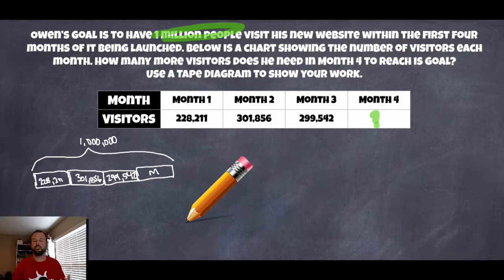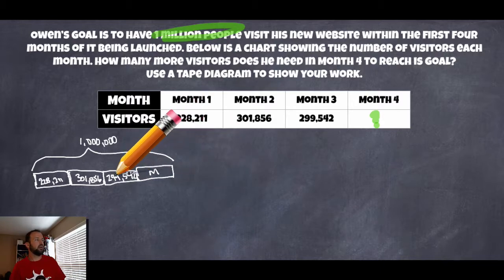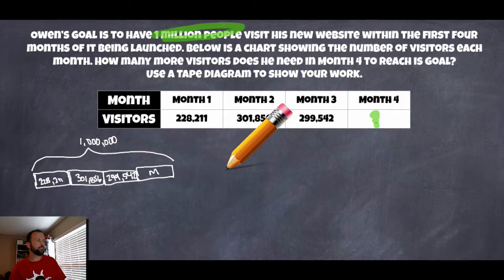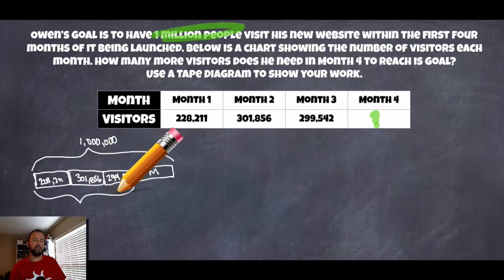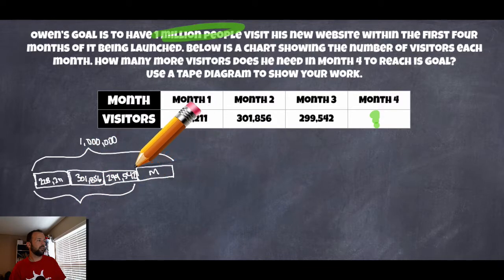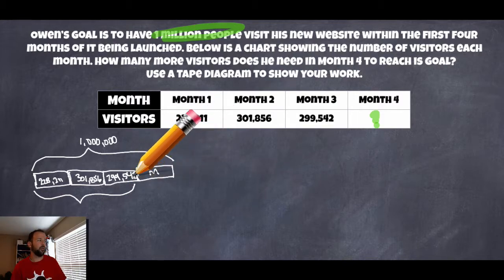You could call it V for visitors, or P for people, or W for website — whatever letter reminds you of what you're trying to find. So this sets up our problem. I know that if I take these three numbers of visitors from the different months and add them up, then subtract that total from one million, whatever's left will be what he needs for that fourth month.